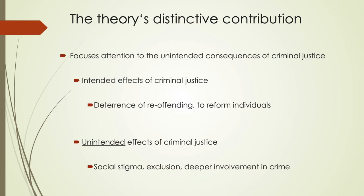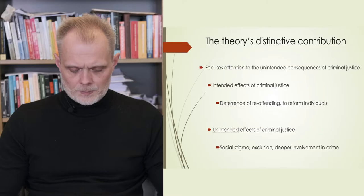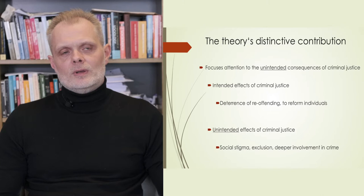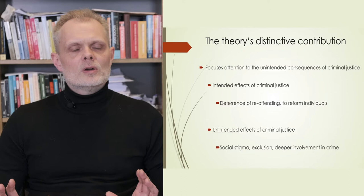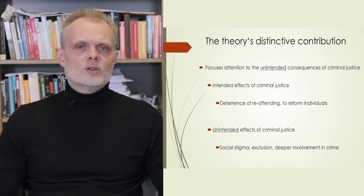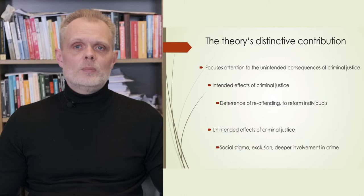First of all, the labeling theory's distinct contribution to criminology is that it draws attention to the unintended consequences of criminal justice. Labeling theory is an excellent example of what Robert Merton, the influential sociologist, told us to do. He said we should not only look at the manifest functions of social institutions, what they are meant to do, but also look at the unintended consequences, what they actually do to people's lives, even if it is often unintentional.